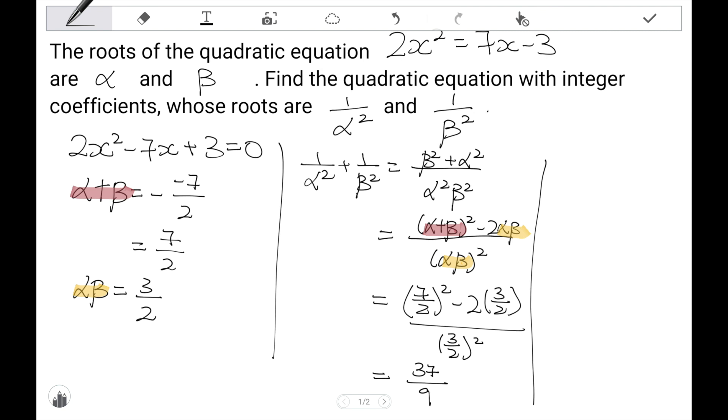Next, I want to find out the product of 1 over alpha squared and 1 over beta squared. Slightly easier, because I have done part of the calculation previously. Okay, substituting this in is 3 over 2 squared. Finally, keying to my calculator, I get my answer as 4 over 9. So far, for these two new roots, I found that the sum is 37 over 9 and the product is 4 over 9.